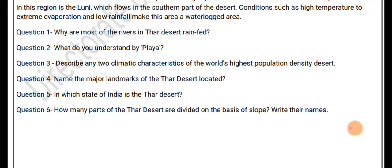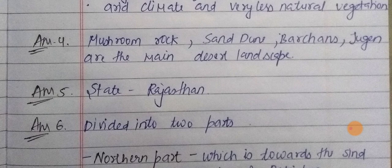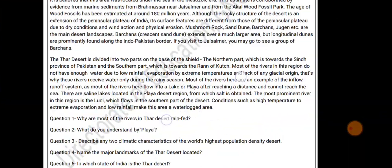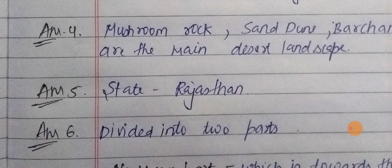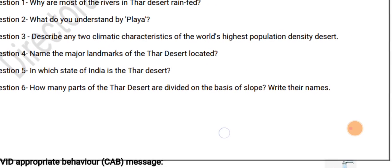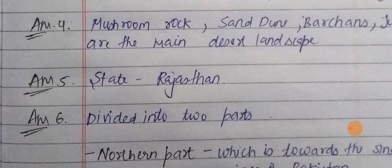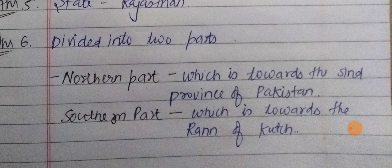Question 4: Name the four main landscape features of the Thar Desert. They are mushroom rocks, sand dunes, barchans, and jugan. Question 5: In which state of India is the Thar Desert located? Rajasthan. Question 6: Into how many parts is the Thar Desert divided on the basis of slope? It is divided into two parts — the northern part, towards the Sindh province of Pakistan, and the southern part, towards the Rann of Kutch.